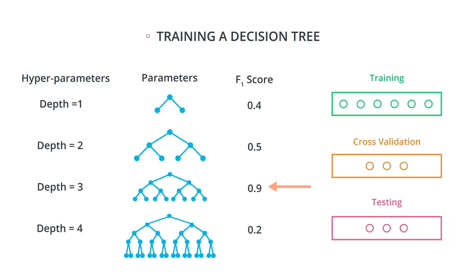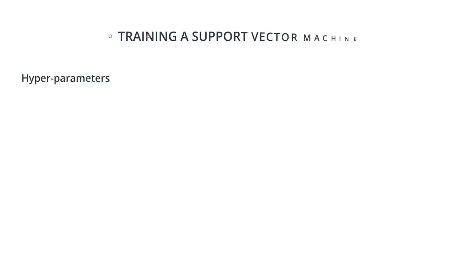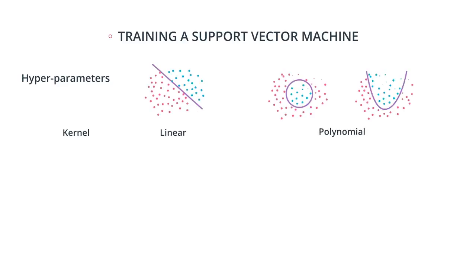So what happens if we have more than one hyperparameter? Here we only have one, which is depth. What if we're training a support vector machine? In an SVM, we have some hyperparameters like the kernel, which can be linear or polynomial. And we also have the gamma parameter, which if it's small, gives us solutions like this. And if it's large, it gives us solutions like that. So how do we pick the best combination between kernel and gamma?